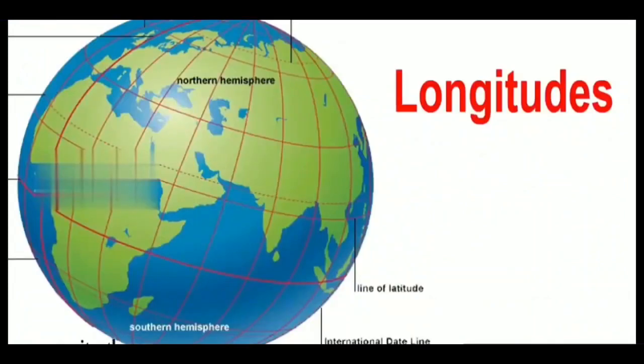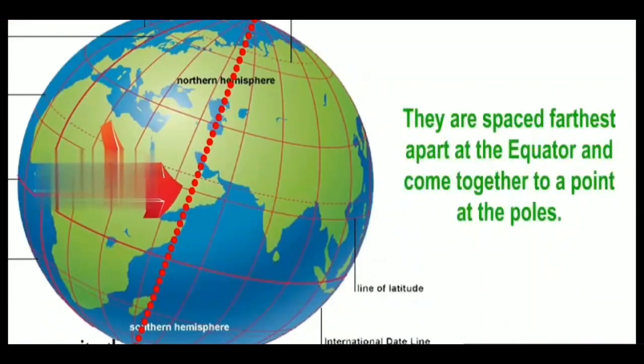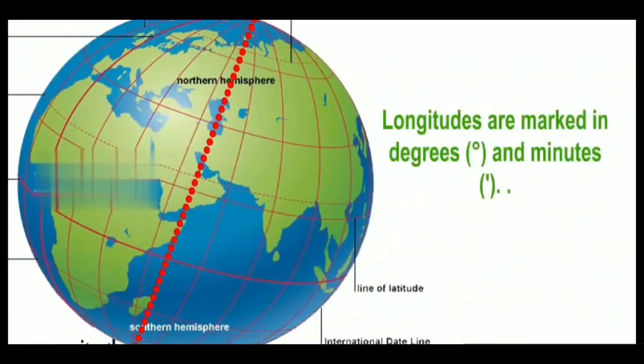Longitudes. The lines of the longitudes are the semicircles that run from one pole to the other pole. They are spaced furthest apart at the equator and come together to a point at the poles. The latitudes and the longitudes cut each other at right angles. Longitudes are marked in 0 degrees and 0 minutes.